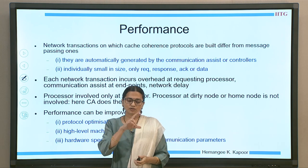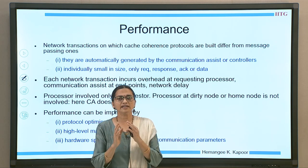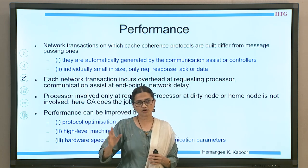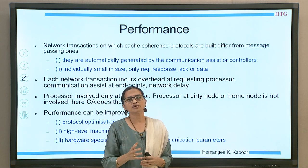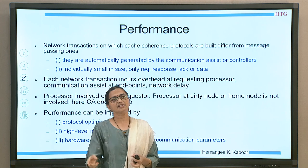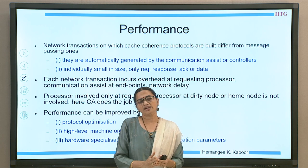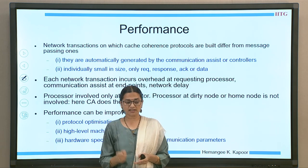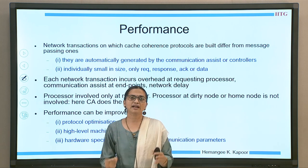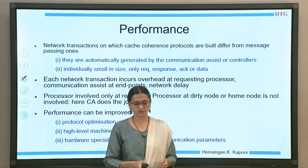Once it goes on the network, it reaches the destination node. Most of the time the destination processor may not be involved, because if you want the data block, the cache controller or the communication assist at the destination can do the job. We also need to optimize the amount of time spent on the network — the network latency and transfer latency. These are the parameters we should consider when improving performance.